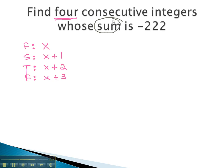Here, we know the sum is negative 222. Sum means we add, and that will equal negative 222.